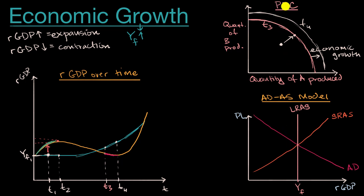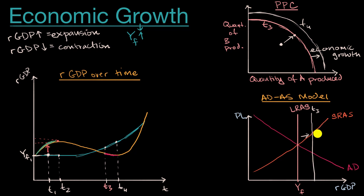The analog for what we saw in the PPC is: maybe this is the long run aggregate supply curve at T sub three. But if our economy has more resources — more population, more natural resources, better technology, better institutions — it's able to produce more at full employment. In that situation, our long run aggregate supply curve would shift to the right. So this could be our long run aggregate supply curve at time T sub four, where full employment output sub three increases to full employment output sub four.